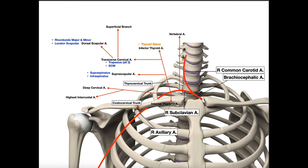The second branch is the internal thoracic artery, which travels downward along the anterior thoracic wall and is responsible for giving off the anterior intercostal arteries. We'll cover the internal thoracic artery in more detail when we discuss the thorax. The third branch is really a trunk — the thyrocervical trunk — also coming off the first part of the subclavian artery.